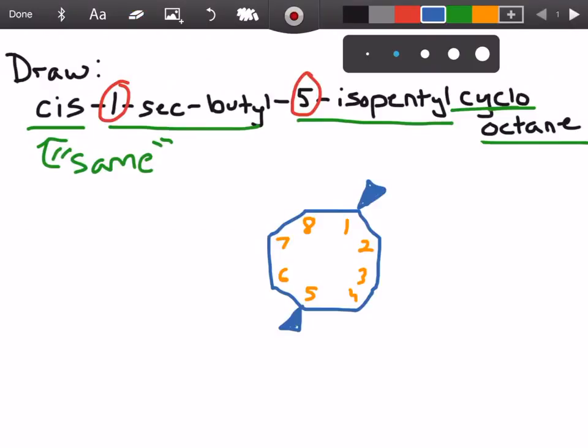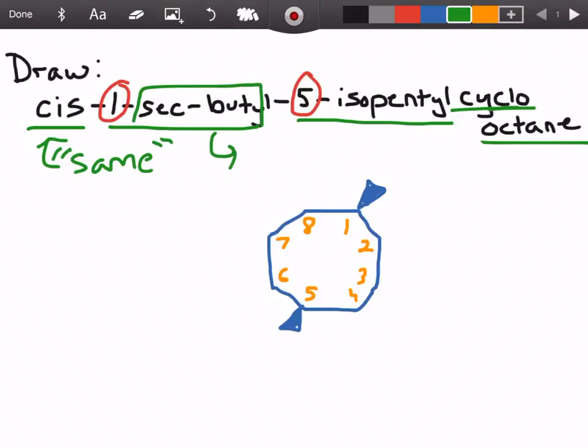Now let's go back and do sec-butyl. So if you guys remember, sec-butyl is going to be a 4 carbon compound but when it comes off it's going to be somewhat sectioned. So normally we have 1, 2, 3, and 4 and we would have a substituent attached to carbon number 1 as our group.